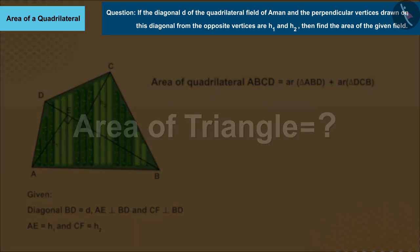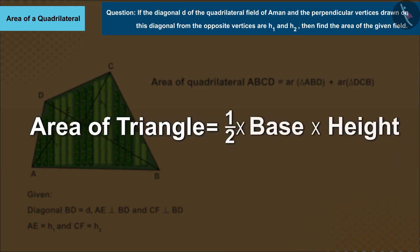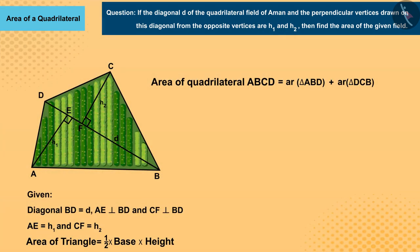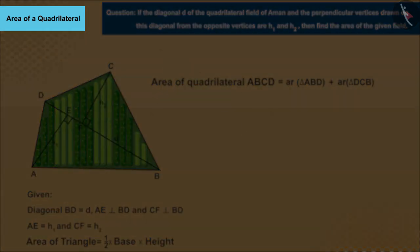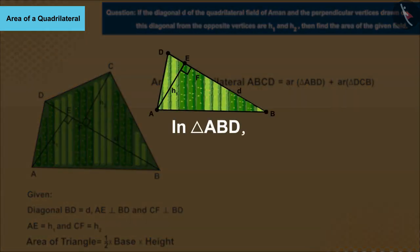Now can you tell the formula of area of a triangle? Well done! The formula for the area of a triangle is one-half times the base times the height. If we look at the triangle ABD, we can say that the perpendicular AE